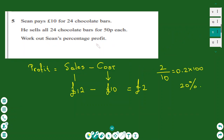Another possible question is problem solving with percentages — for example, finding percentage profit. First find the actual profit. We have cost and sales. He sells 24 chocolates at 50p each, so sales equals 12 pounds. The cost is 10 pounds, so the profit is 2 pounds. Divide profit by cost: 2 over 10 equals 0.2, then multiply by 100 to get 20 percent.